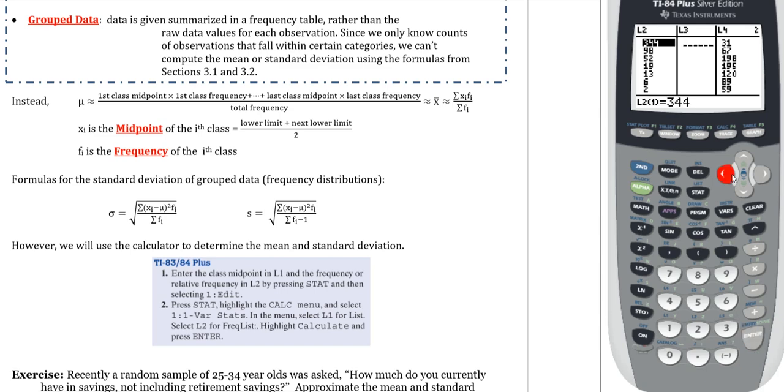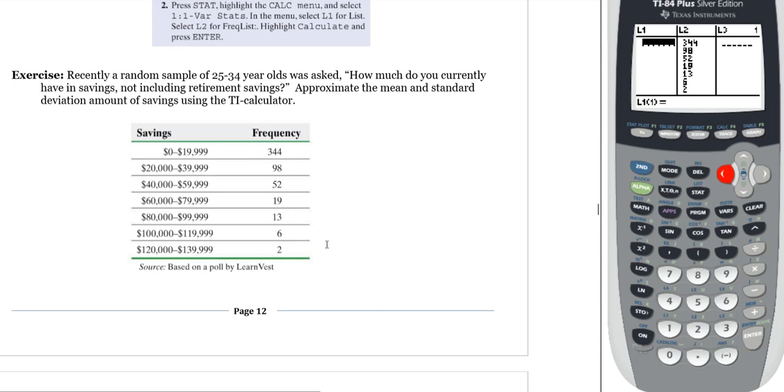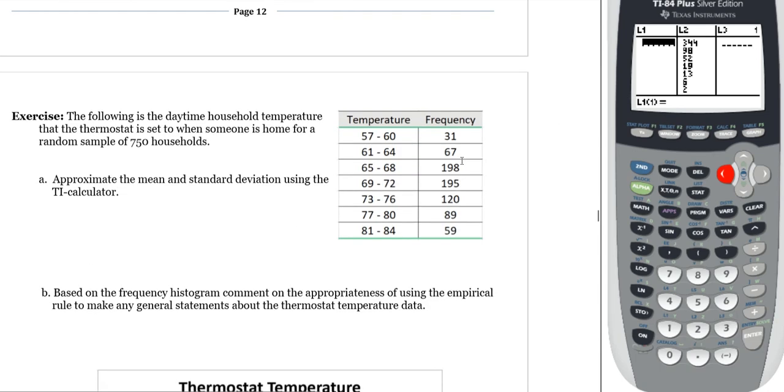In list 2, put the frequency list from the bottom of page 12, so 344 down to 2. Leave list 3 blank, and then in list 4, put the frequency list at the top of page 13, the numbers from 31 down to 59.